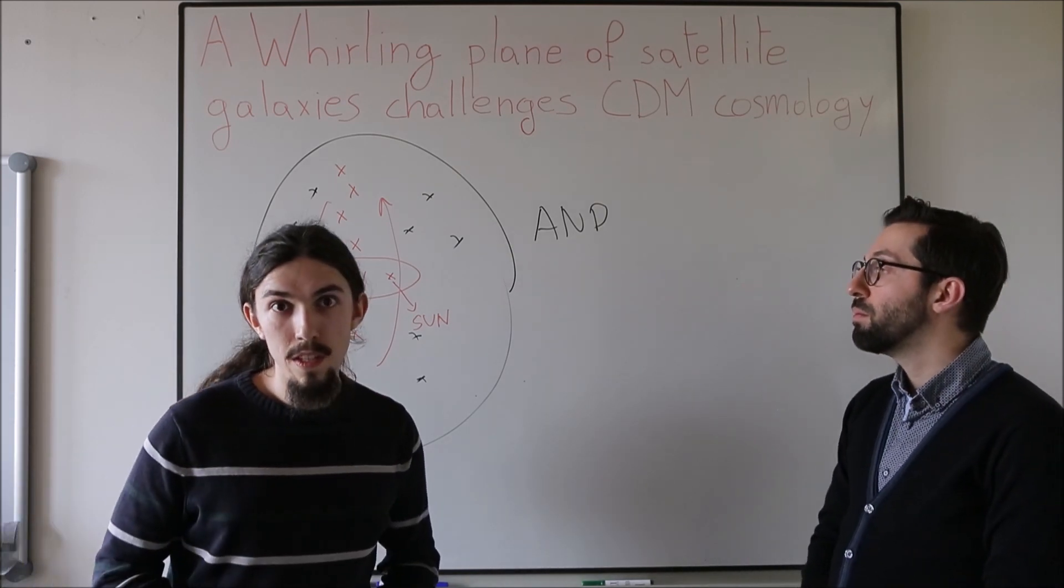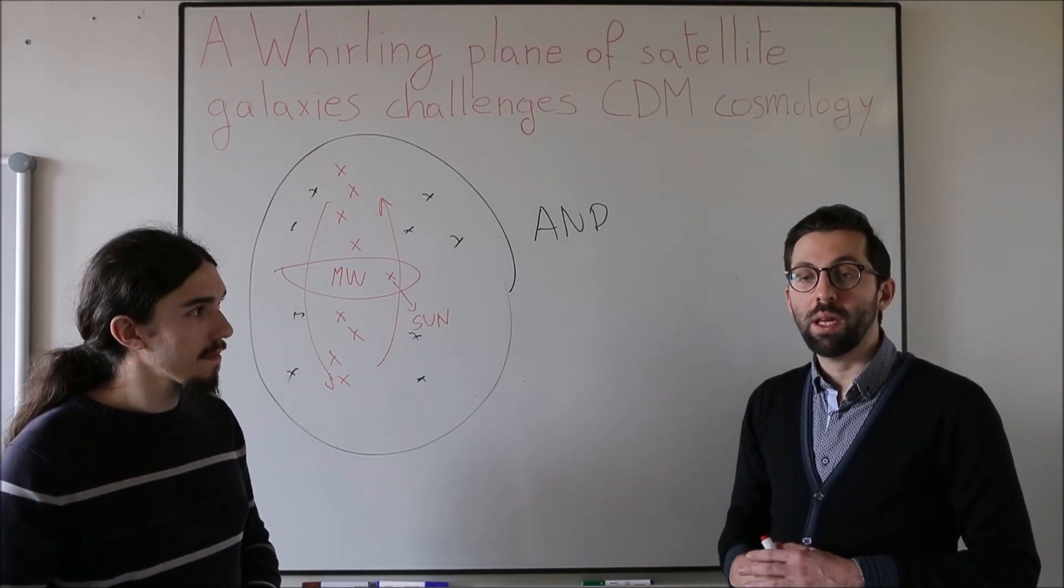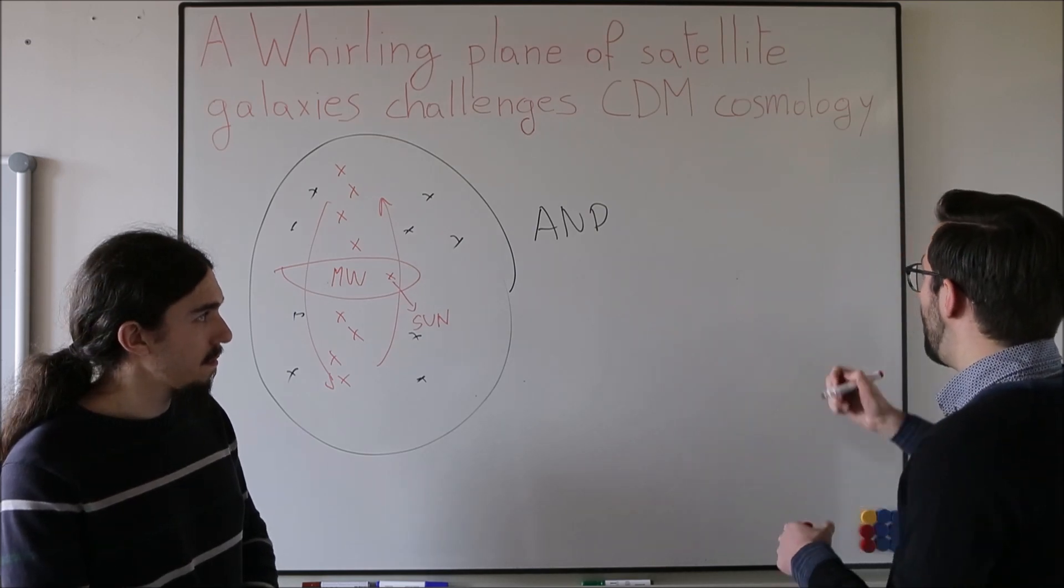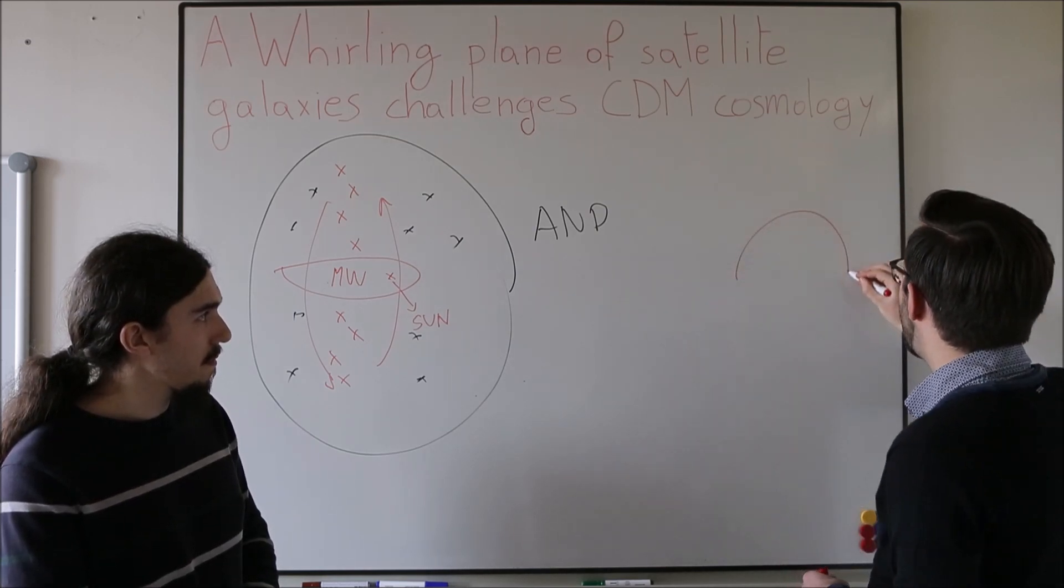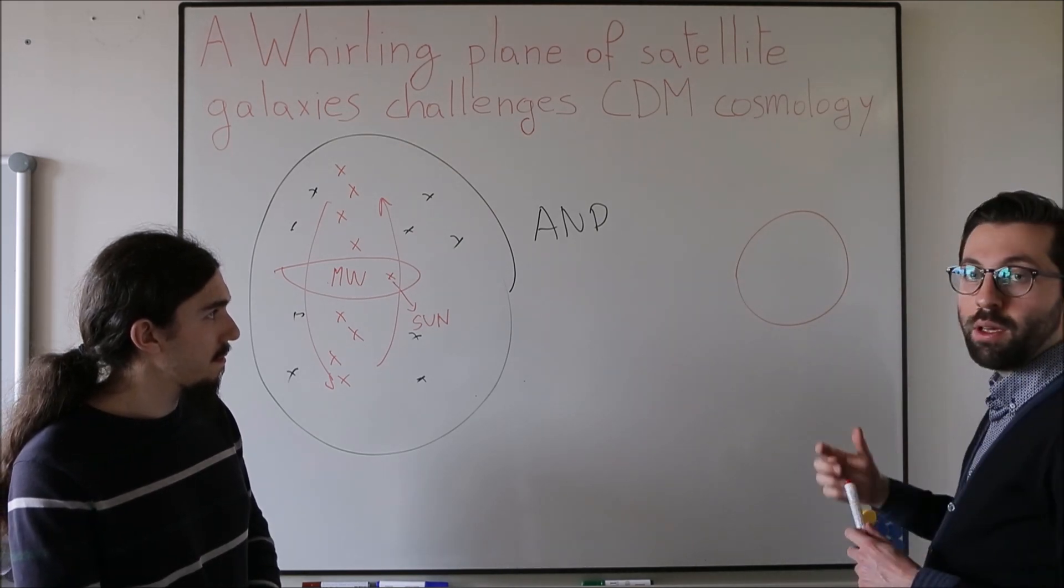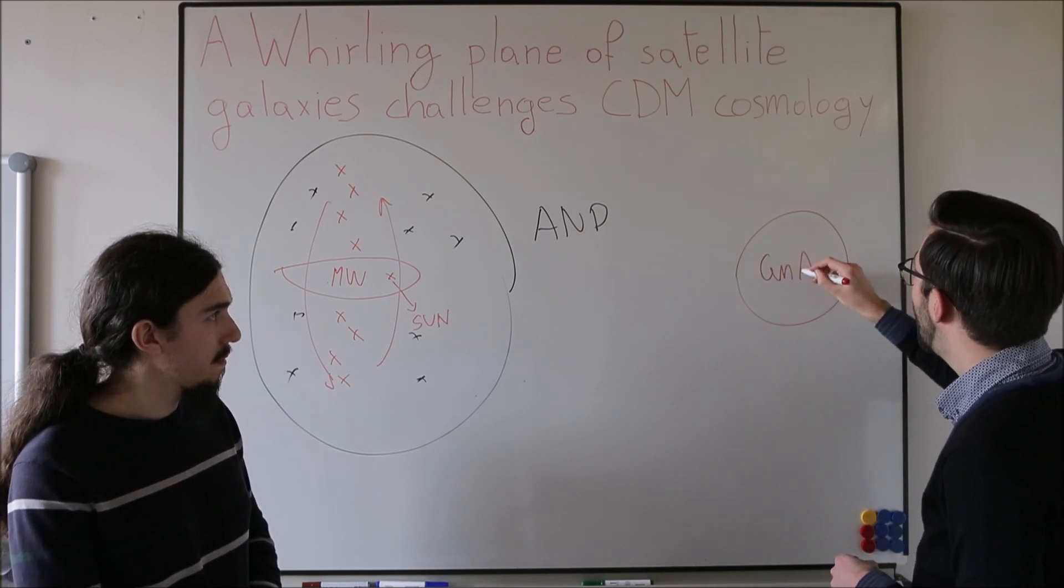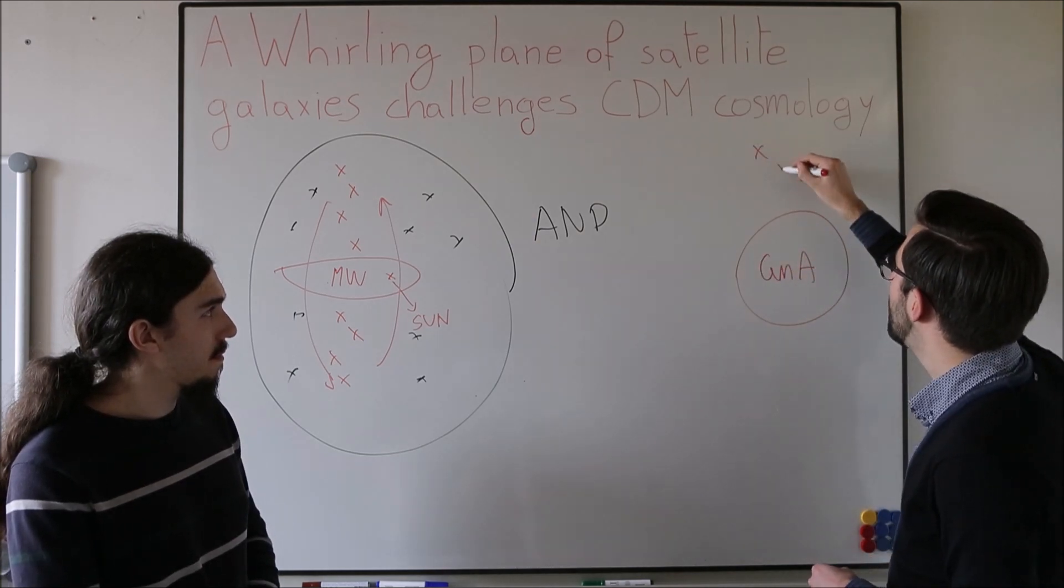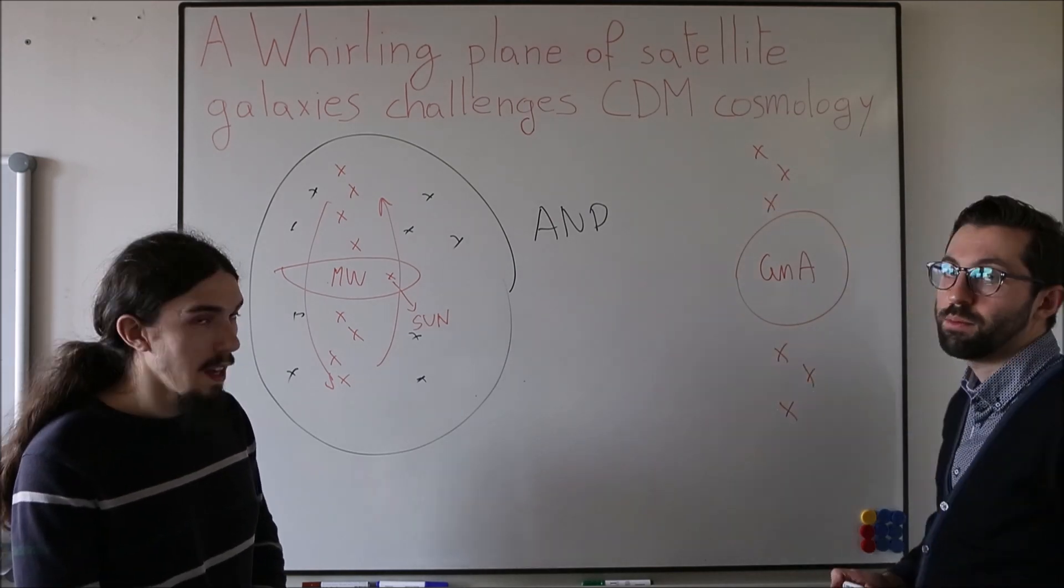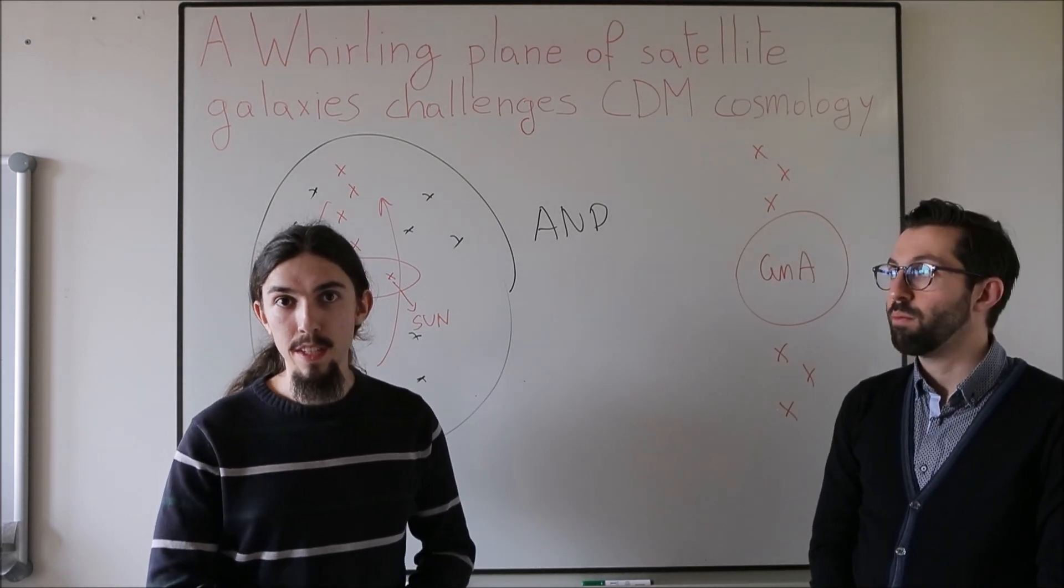That's why we choose to study the Centaurus A galaxy. Centaurus A is a big galaxy which has an elliptical shape. Essentially, the stars are distributed in a spherical fashion. We know about 30 dwarf satellites around Centaurus A and they also seem to be aligned on a plane. In our work, we studied the motion and velocities of these satellites.